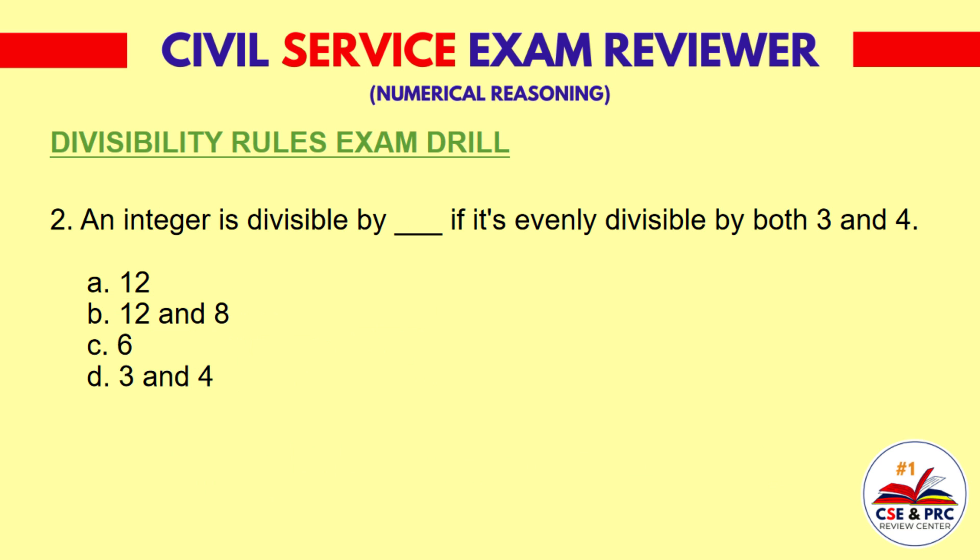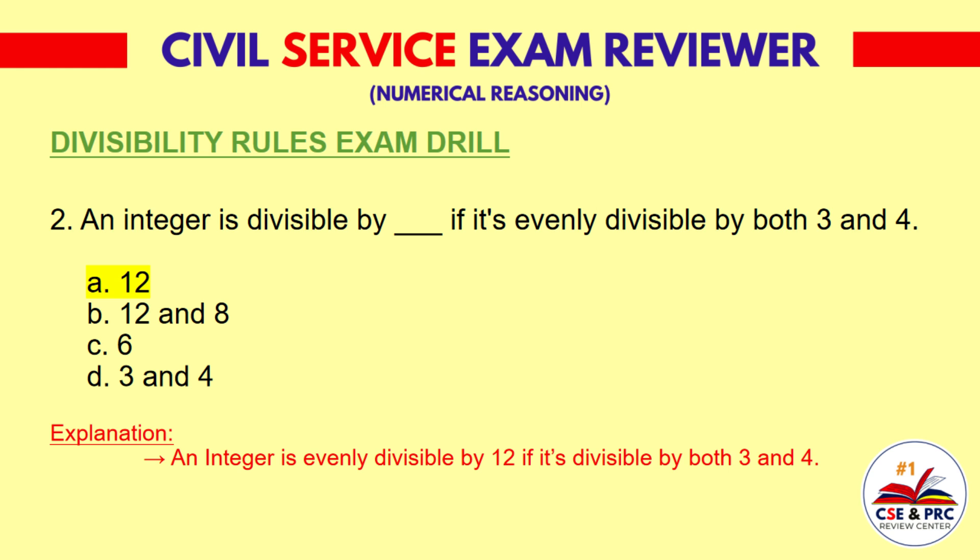Question 2: An integer is divisible by blank if it's evenly divisible by both 3 and 4. A. 12. B. 12 and 8. C. 6. D. 3 and 4. The answer is A: 12. An integer is evenly divisible by 12 if it's divisible by both 3 and 4.